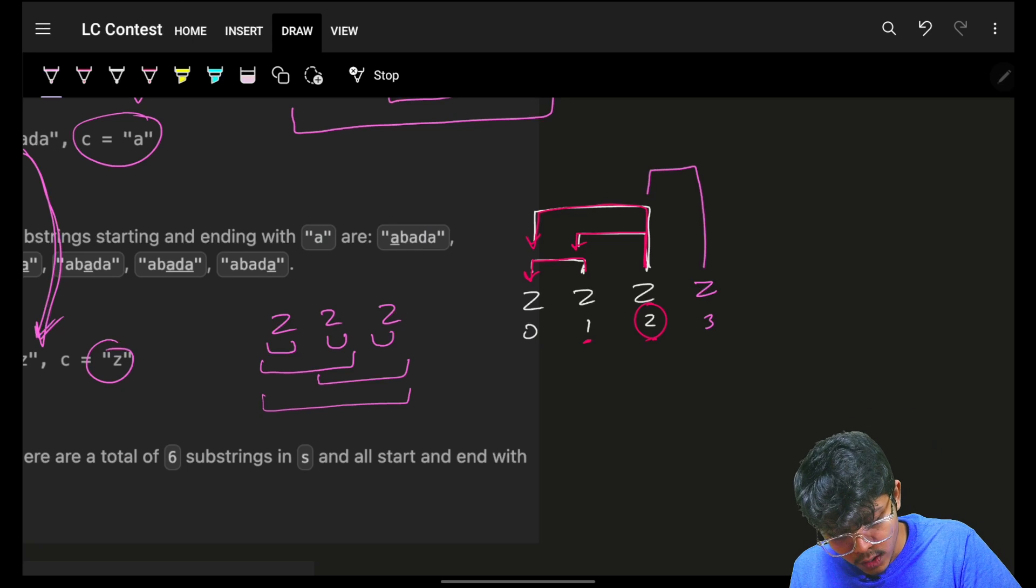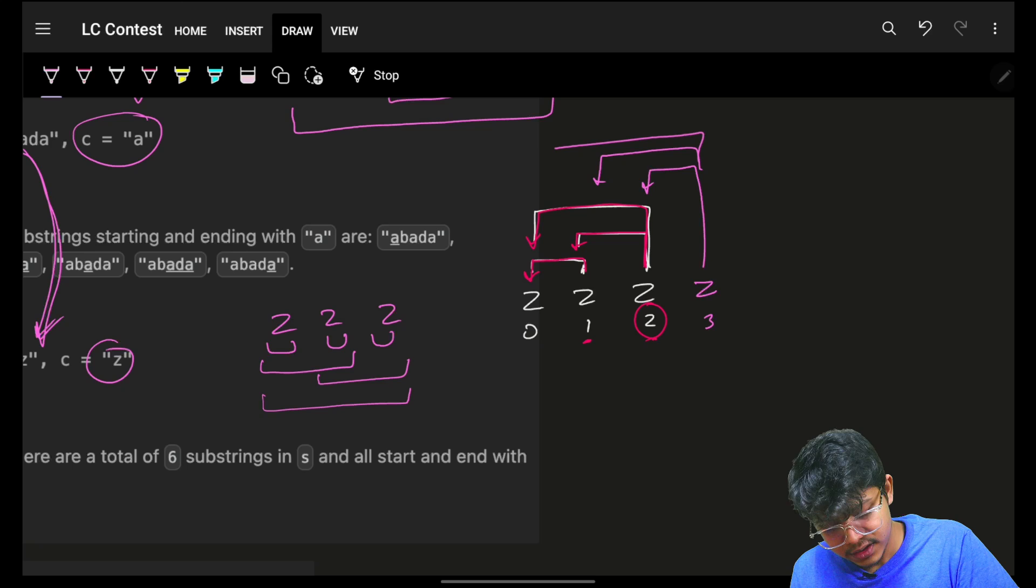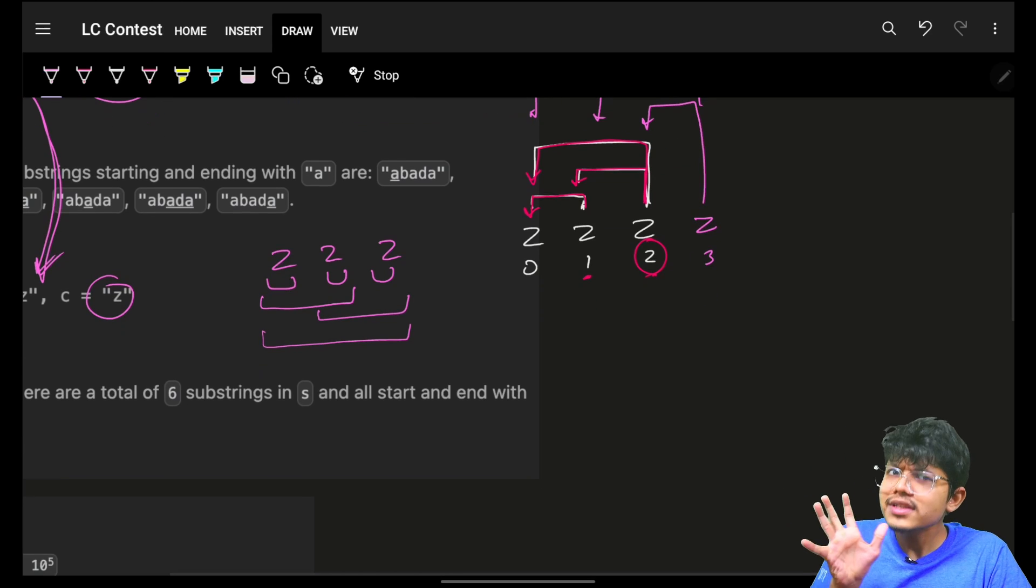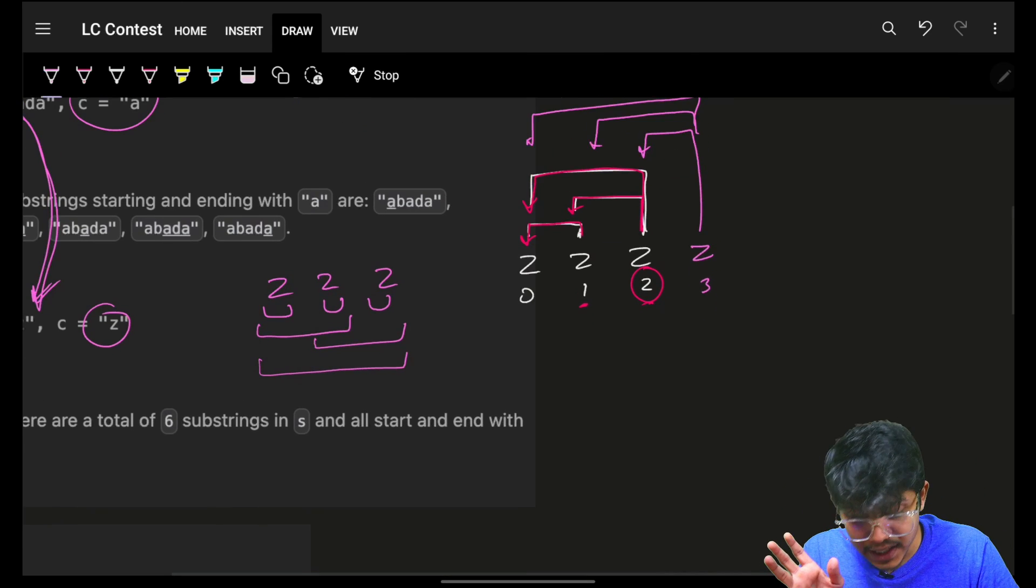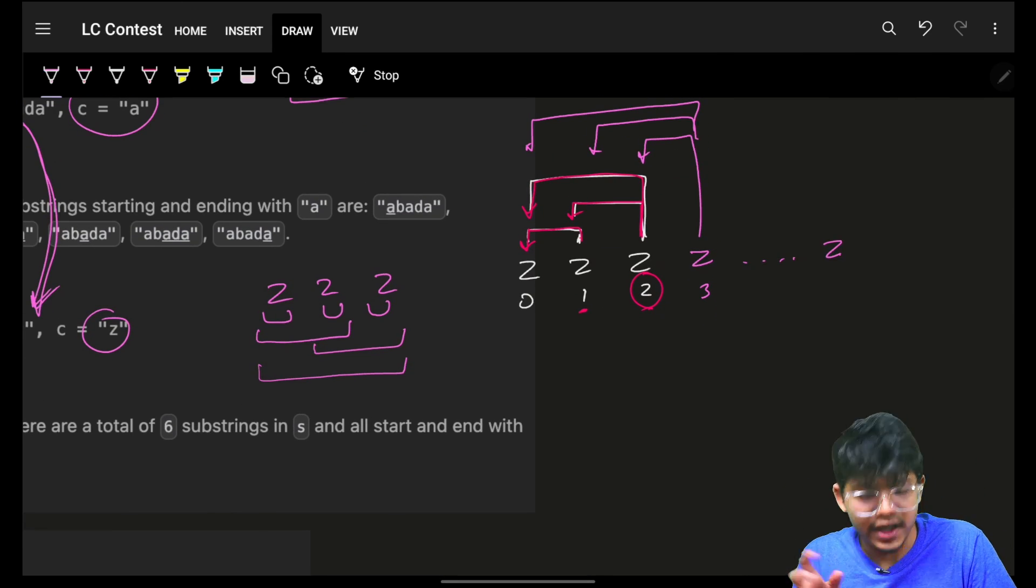And let's say, let's say, let's increase the complexity. Let's say I had one more z. So from this index three of the z, I would have one, two, three, three more substrings. So you can simply see it is keep on going. Again, you know that at last you can have at max n minus one.